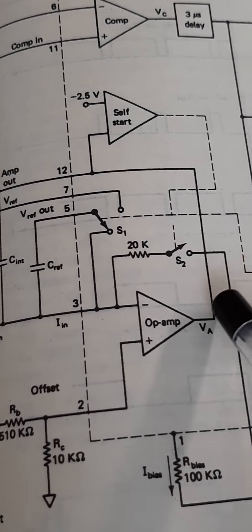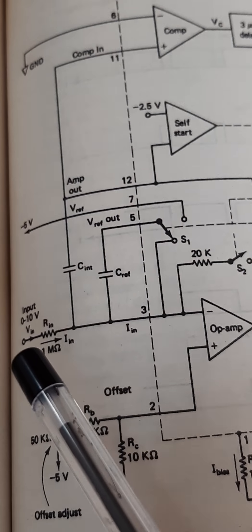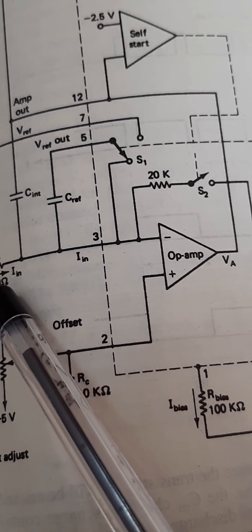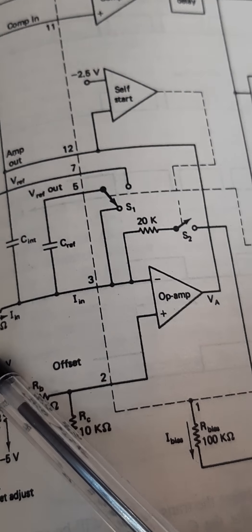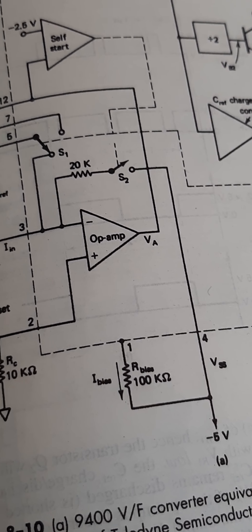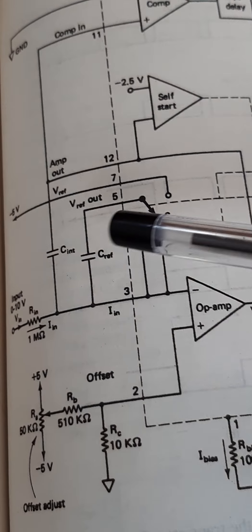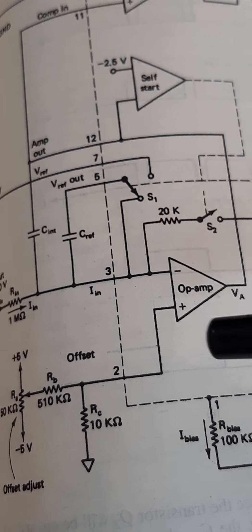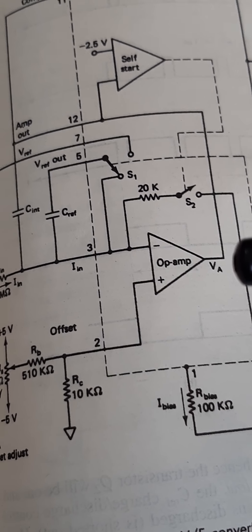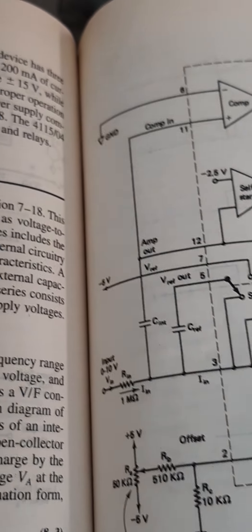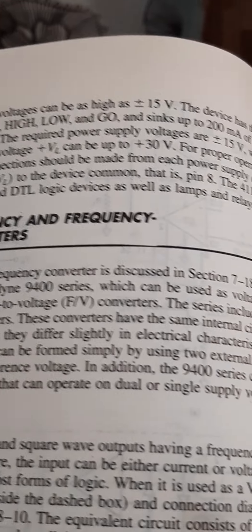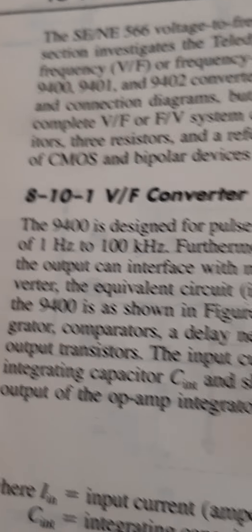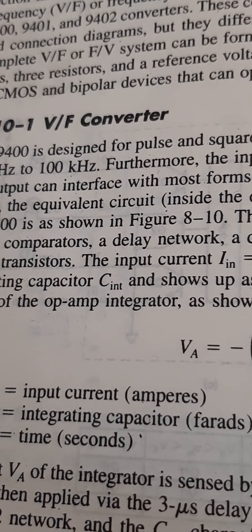At the output of the op-amp integrator, the linearly decreasing voltage VA can be represented as: VA = minus of IIN divided by CIN multiplied by T, where IIN is the input current in amperes, CIN is the integrating capacitor, and T is the time.